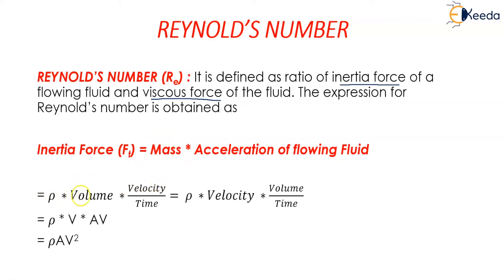ρ multiplied by volume multiplied by velocity upon time. Now this can be arranged as ρ multiplied by V multiplied by v multiplied by A into v. So now this becomes ρ multiplied by A multiplied by v².